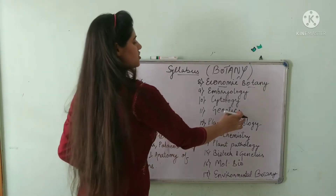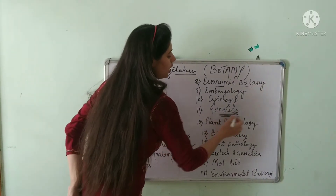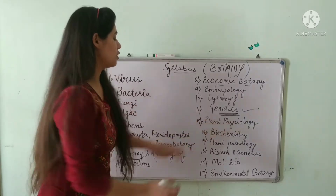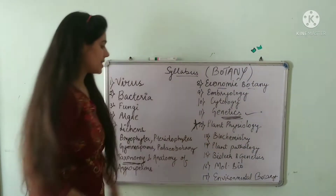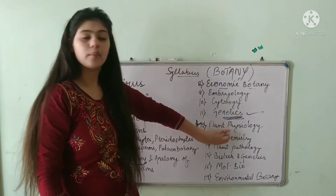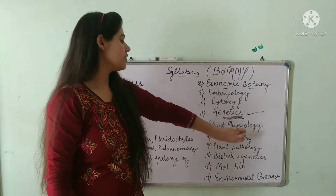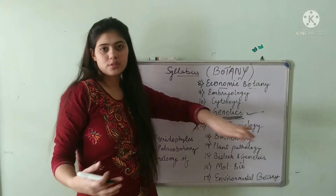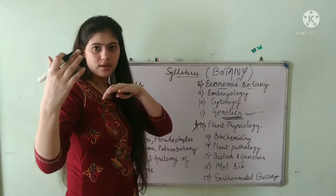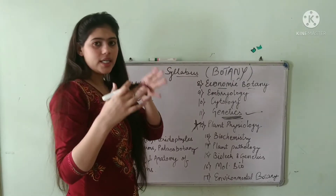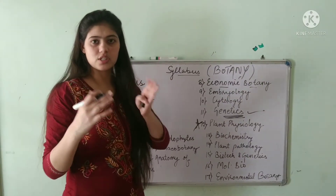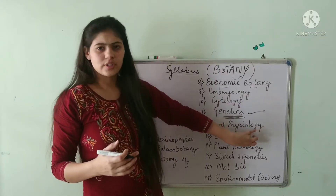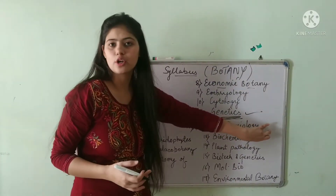Next is Genetics. Genetics is also an important topic. Next is Plant Physiology — very important, just as animal physiology is important, plant physiology is equally important. This includes photosynthesis and respiration: photosystem 1, photosystem 2, the Calvin cycle, and the electron transport chain. These are all included in this topic.